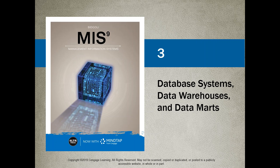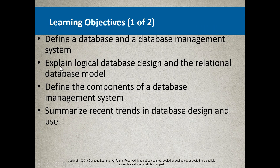Welcome back. This is Managing Information Systems, CSIS 2200. We are carrying on with chapter number three, which deals with the database component of managing an information system. It's a very important concept — a computer discipline on its own. We're going to be focusing on database systems, how data is warehoused, and what a data mart is.